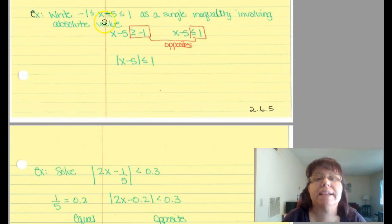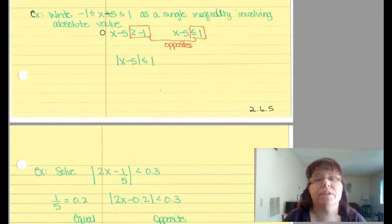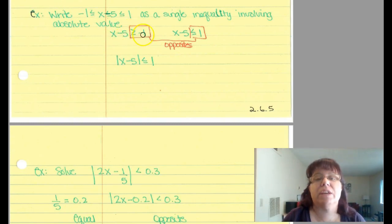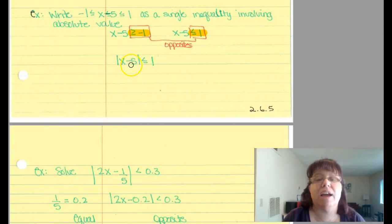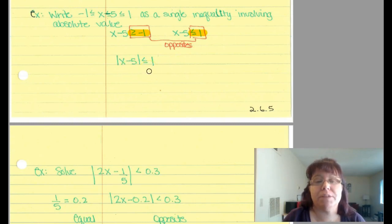Let's write negative 1 is less than or equal to x minus 5 is less than or equal to 1 as a single inequality involving absolute values. Rewriting separately: x minus 5 is greater than or equal to negative 1, and x minus 5 is less than or equal to 1. If you have two expressions where the inequality symbols are opposite and the numbers are opposite, then you can write it as an absolute value: the absolute value of x minus 5 is less than or equal to 1. Because the right-hand sides, including the inequality symbols, were opposites, we can write it as an absolute value.